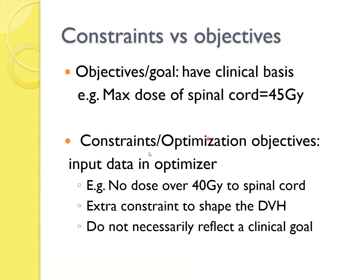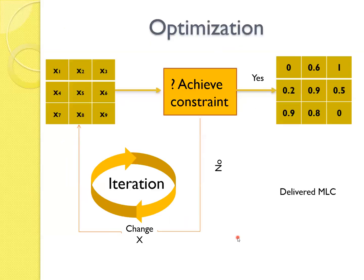So the optimization object input data optimize. No dose over 40 gray, for example, input, and that will resolve around 45 or maybe less. So extra constraint to shape the DVH do not necessarily reflect the clinical goal. So this is how the optimization works. These are blanks right now. Achieve the constraint, and you'll get the result. If it doesn't achieve your desired results, then of course iteration will go on. And once it's done, it will be delivered with MLC.